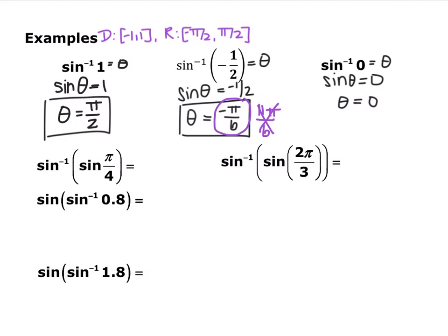For the last one, sine inverse of zero equals θ — or sine of what angle equals zero — and that angle is zero.